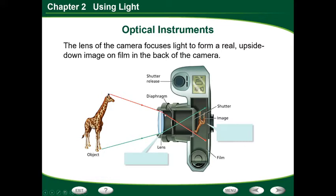And then after that, it's going to bend the light to go through our aperture here. The aperture is the hole in the diaphragm that allows light to pass through. The diaphragm is the part that's going to open and close, kind of like the iris of the eye.